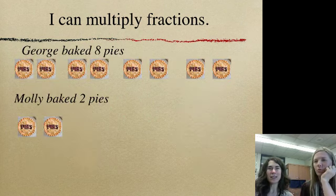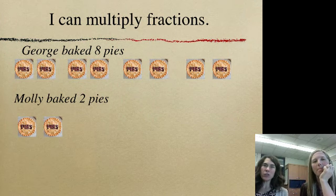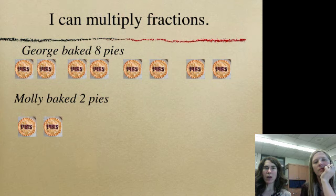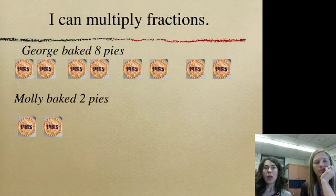So now we're just going to look at another picture and talk about how we can look at this and compare these two. We have George baked eight pies, and there's our nice visual. And then Molly, she only baked two pies that day.